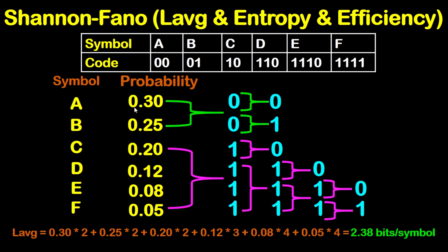So in this case, we have 0.3 for symbol A. I will multiply 0.3 by the length of code, which is 2, since we have 2 bits. Plus probability of B, which is 0.25, multiply by length of code, which is also 2. So I will multiply 0.25 by 2. Plus 0.20, which is for C, by length of code, which is 2.